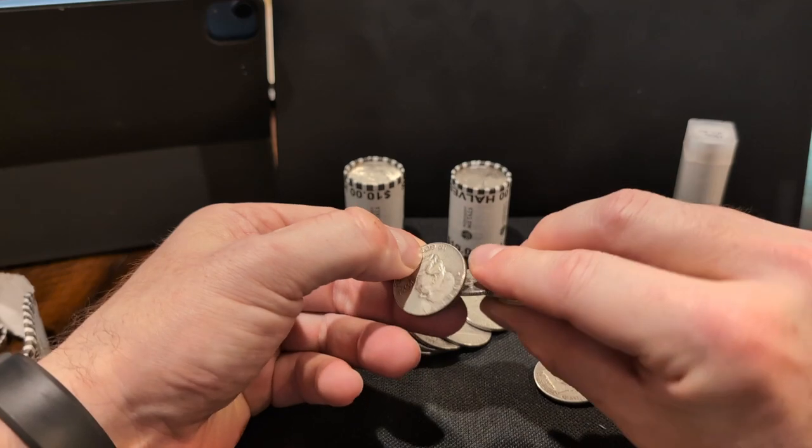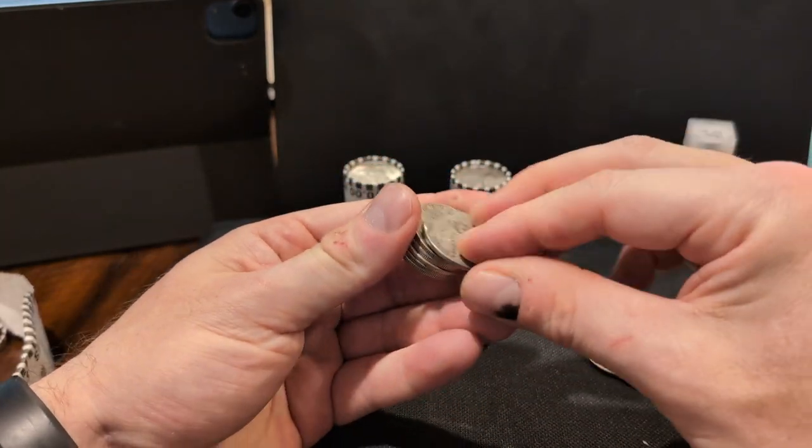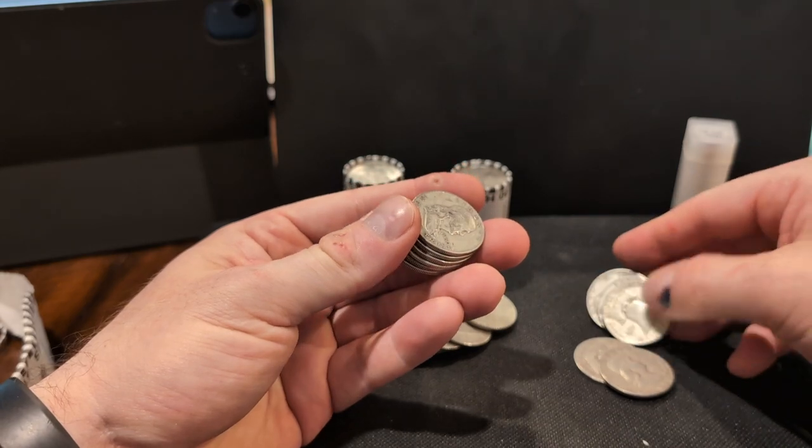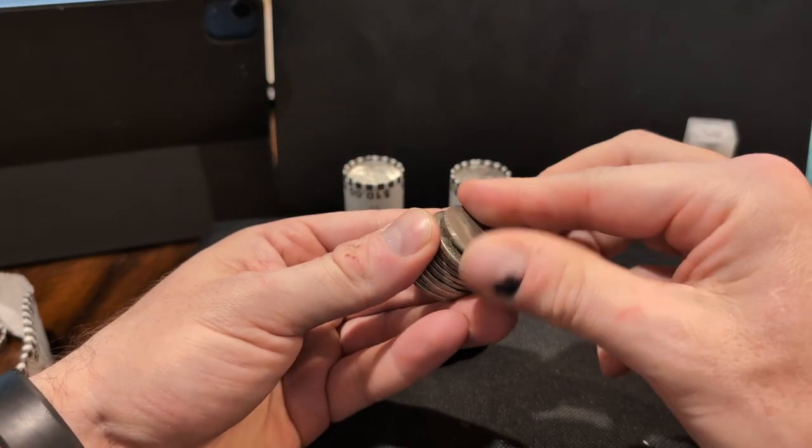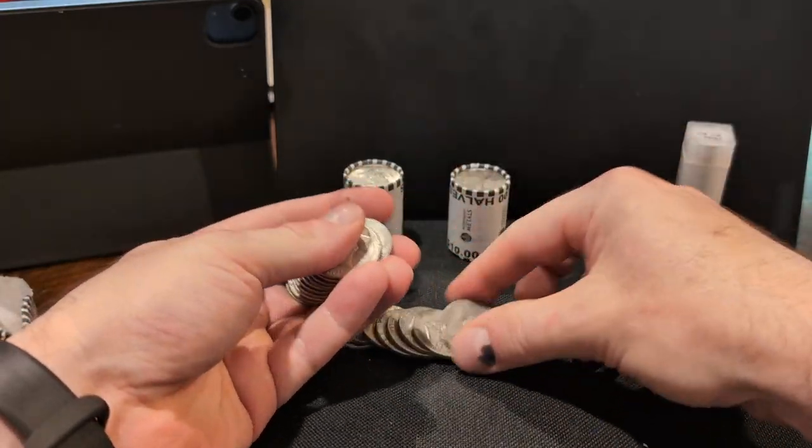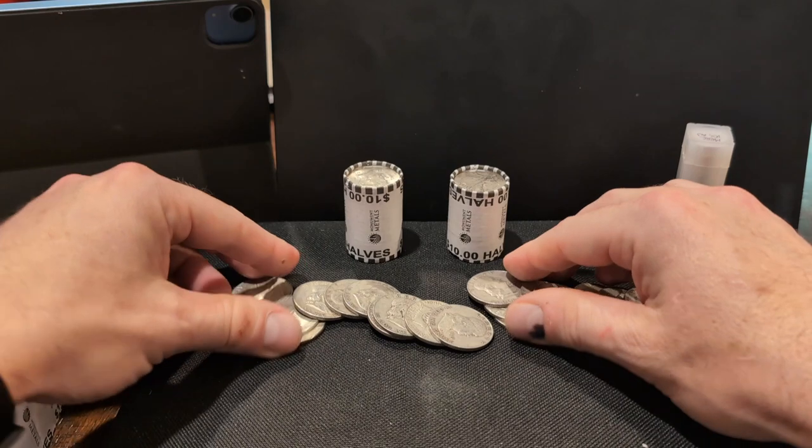So these are the Franklins. Now, with these, I'm not going to go with the airtight plastic direct fits or whatever, I'm just going to get like a regular old coin tube. Maybe my father had some extras that I could tap into. But anyway, these are the Franklin halves.